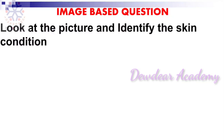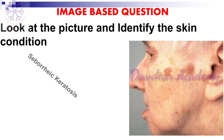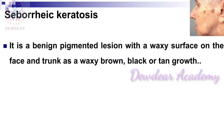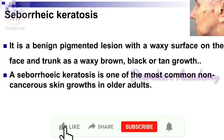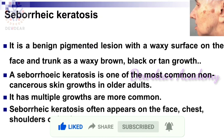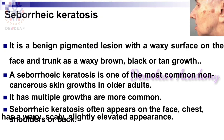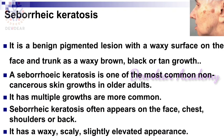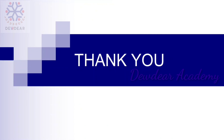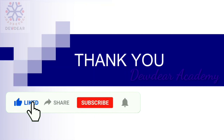Next question: look at the picture and identify the skin condition. The answer is seborrheic keratosis — a benign pigmented lesion with a waxy surface on the face and trunk. It has a waxy, brown, black, or tan growth and is one of the most common non-cancerous skin growths in older adults. It often appears on the face, chest, shoulders, or back with a waxy, scaly, slightly elevated appearance. Thank you for watching the video; you can share this video with your friends.